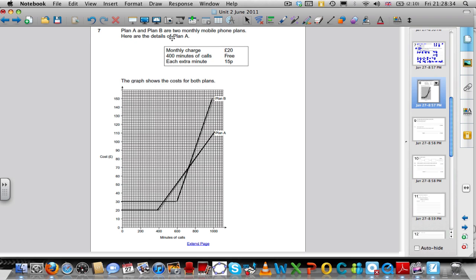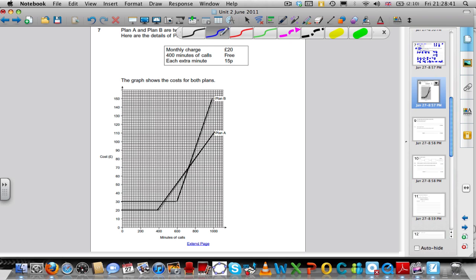Let's see if we can work out what's happening in these graphs before we even have a look at the question. There are plan A and plan B, and their monthly contracts are as follows. Plan A, £20 monthly charge. So looking at the graph, plan A has £20 monthly charge. That's why it's flat along here.